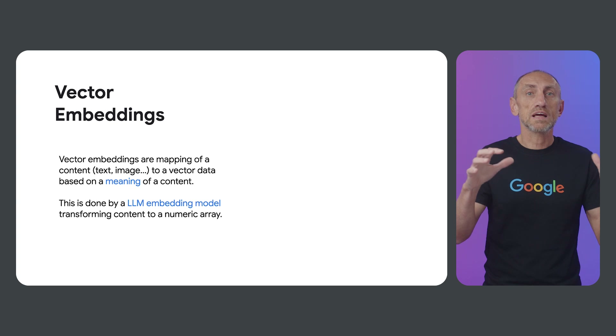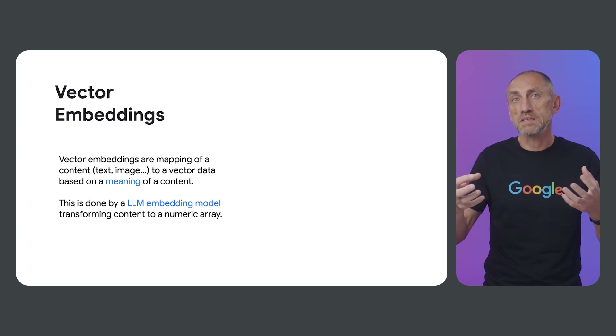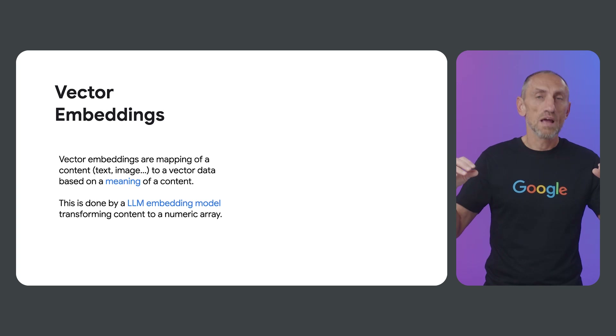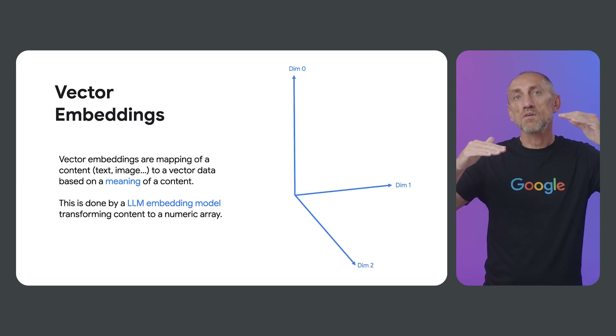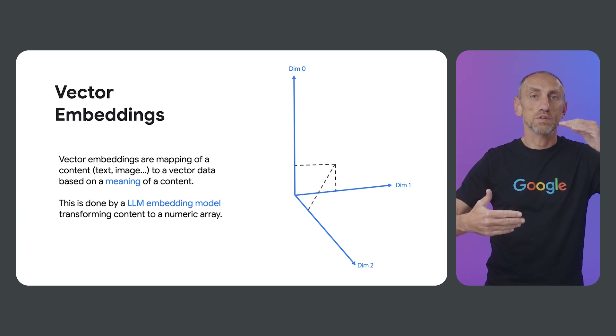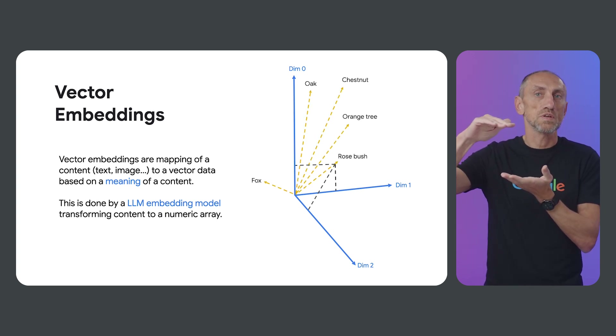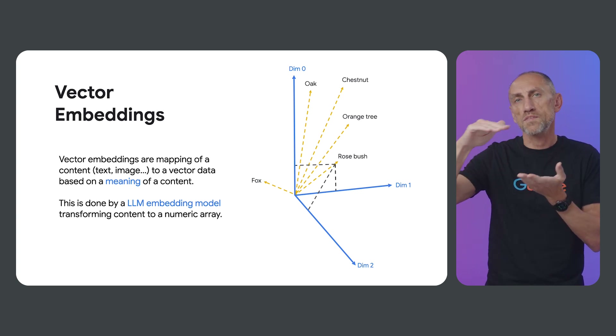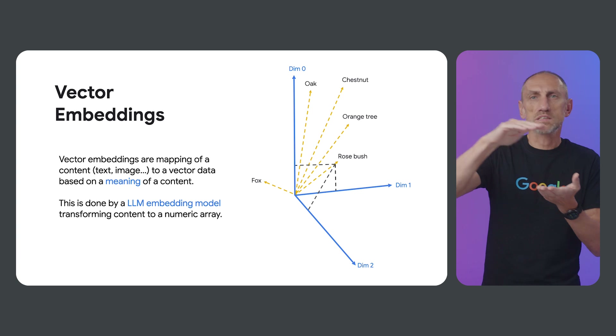One small step back to understand how we would find the matching items in our database based on the request. LLM can convert our request or question to a numeric representation — a numeric array — based on the semantic meaning of the request rather than the words used. We call it a vector. In our operational database, we can also convert the description for the product in the inventory to similar vectors. Then we compare the vector of our request with all the vectors for the products and get the five best matches to return back to our chat application, along with other information about the product, like price, description, or something else.